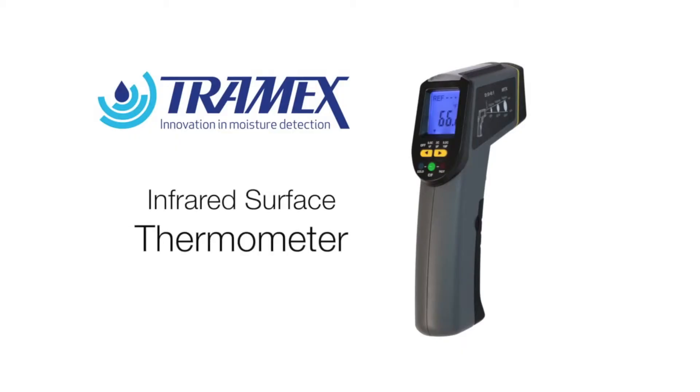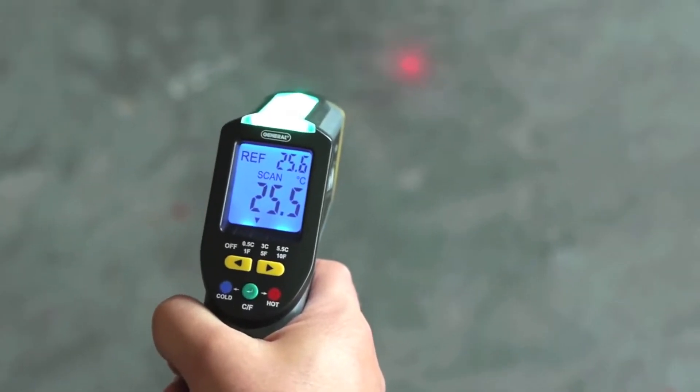By using an infrared surface thermometer in combination with the relative humidity results, it becomes easy to identify condensation problems.